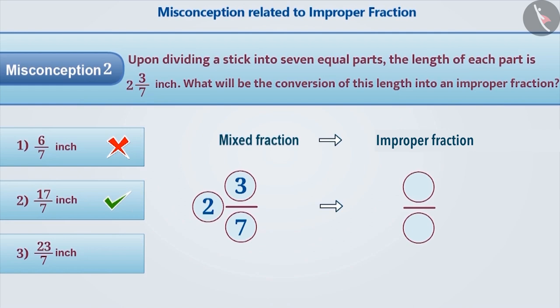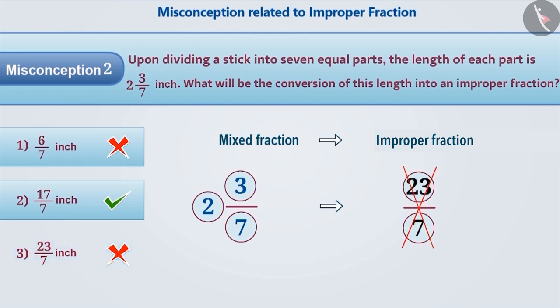Sometimes, to obtain an improper fraction, the values of both the whole number and the numerator are written together. By doing so, we get an incorrect answer, that is, 23/7.